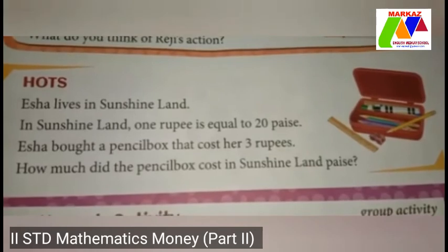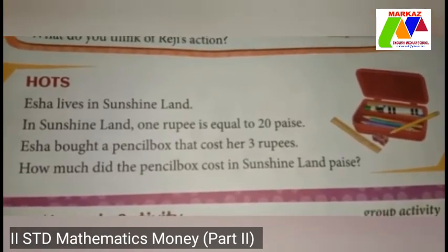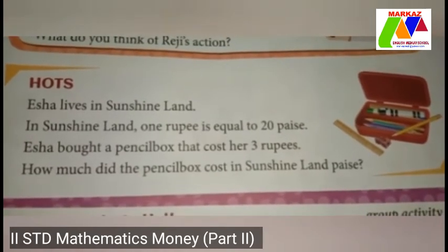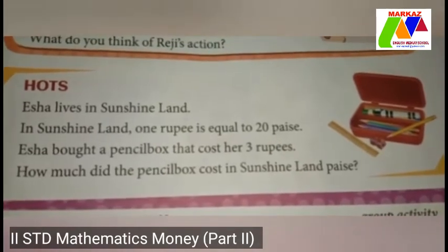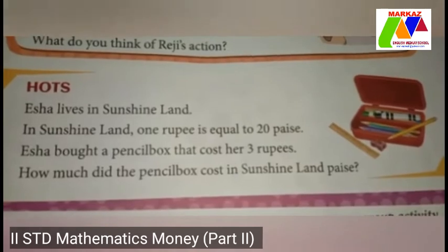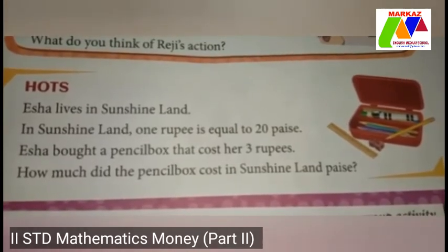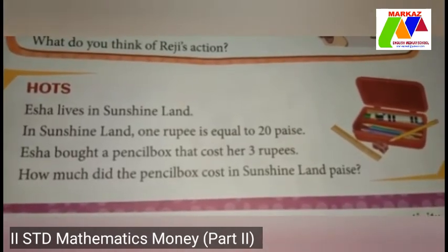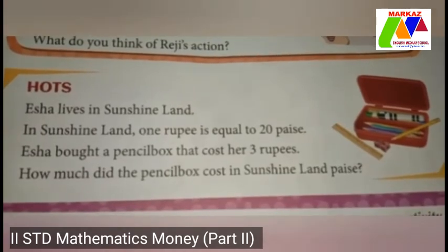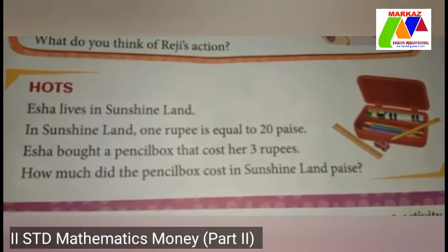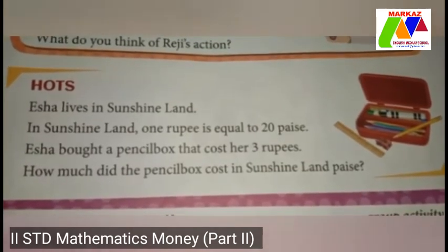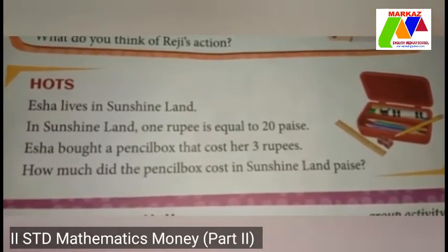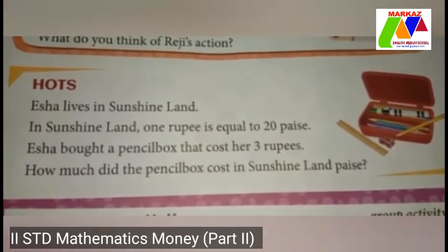Next: Hisha lives in Sunshine Land. In Sunshine Land, one rupee is equal to twenty paisa. Hisha bought a pencil box that costs three rupees. How much did the pencil box cost in Sunshine Land in paisa? Here, in Sunshine Land, one rupee is equal to twenty paisa. So the cost of the pencil box is three rupees into twenty paisa, which is equal to sixty paisa. The answer is sixty paisa.